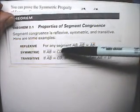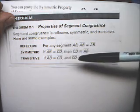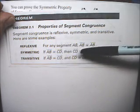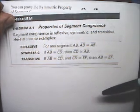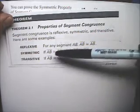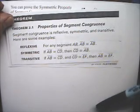It says if segment AB is congruent to CD, then segment CD is congruent to segment AB. And it just reverses the congruence.